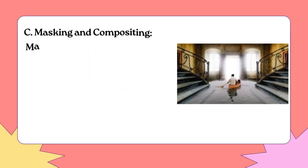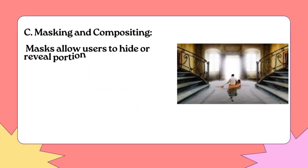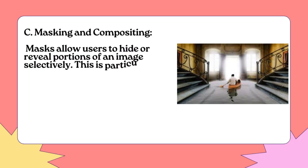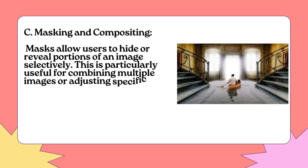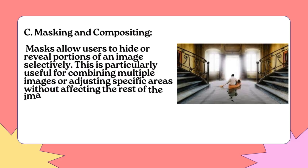C. Masking and Compositing: Masks allow users to hide or reveal portions of an image selectively. This is particularly useful for combining multiple images or adjusting specific areas without affecting the rest of the image.